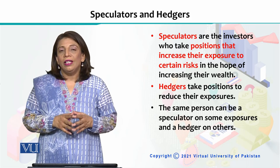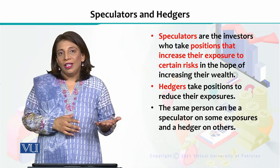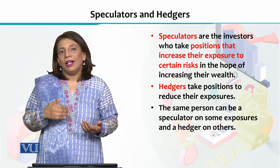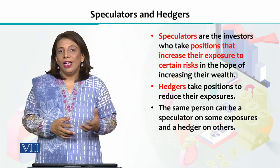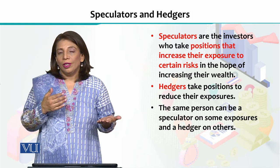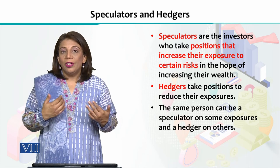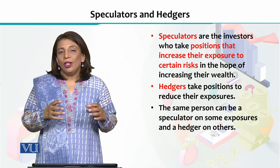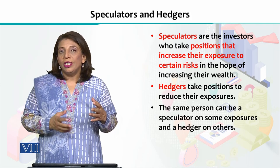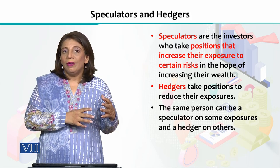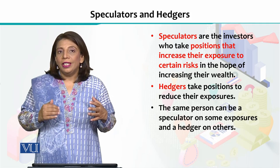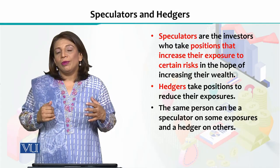It is important to understand the behavior of the speculator with respect to risk tolerance and the behavior of the hedger with respect to risk tolerance. One is increasing risk tolerance and one is decreasing it. Risk tolerance is opposite to risk exposure: if risk exposure is increasing, that is being done by the speculators. If risk exposure is decreasing, then we are talking about the hedgers.